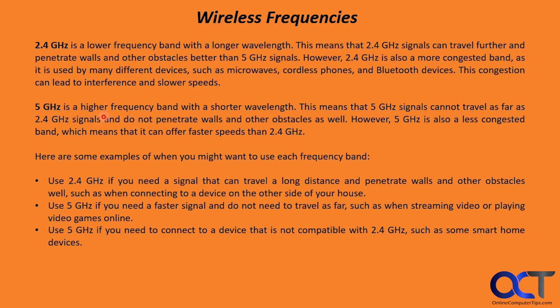Then we have the 5 gigahertz frequency, which is a higher frequency with a shorter wavelength. This means 5 gigahertz cannot travel as far as 2.4 gigahertz signals and does not penetrate walls and other obstacles as well. However, 5 gigahertz is a less congested band, which means it can offer faster speeds than 2.4 gigahertz.